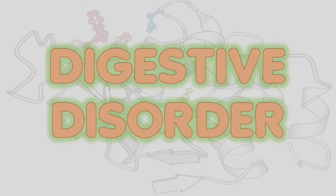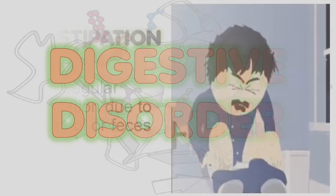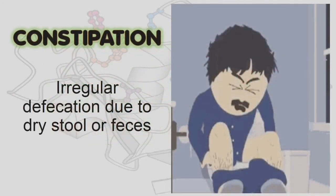Eating too much or eating the wrong kinds of food can lead to different digestive disorders or diseases. The first on the list is constipation. Constipation is the irregular defecation due to dry stool or feces. It is caused when digestive waste moves slowly through the colon. To get rid of this disorder, we need to eat more fruits and vegetables to provide more fiber that will help push waste out of the colon.